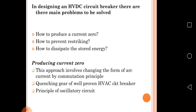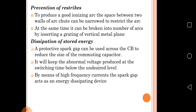This includes quenching gear of bell-proven HVAC circuit breaker principle and oscillatory circuit. Prevention of restriking: to produce a good ionizing arc, the space between two walls of the arc chute can be narrowed. At the same time it can be broken into a number of arcs by inserting a grating of vertical metal planes.